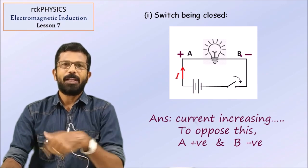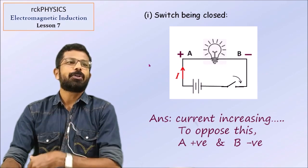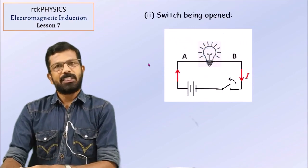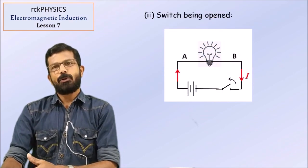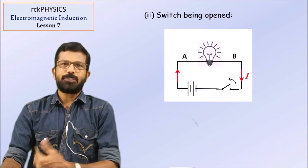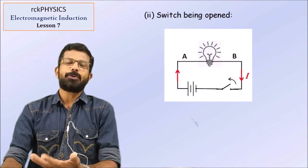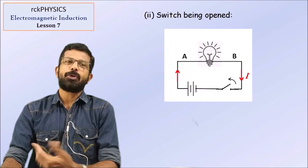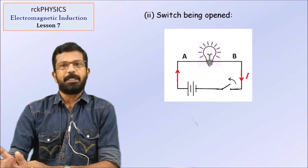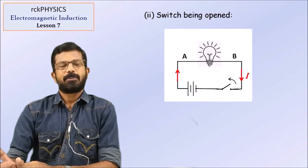Now let us go to the next situation — just the reverse of this case. The bulb was glowing, current was flowing, and you are now going to open the switch. When you open the switch, the current I, which was a steady current flowing through the circuit, drops to zero.